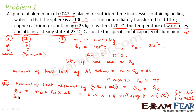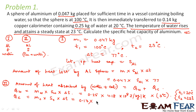Similarly, the amount of heat absorbed by the copper calorimeter is the mass of the calorimeter multiplied by the specific heat capacity of copper multiplied by the change in temperature. The mass of the calorimeter is 0.14 kg, the specific heat of copper is 0.386 into 10 to the power 3, and the change in temperature is again 3 degree Celsius.